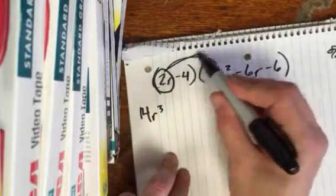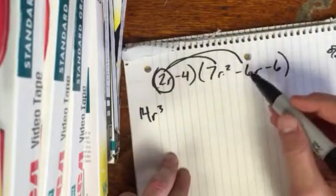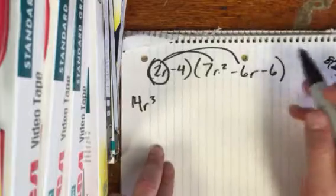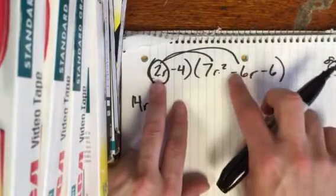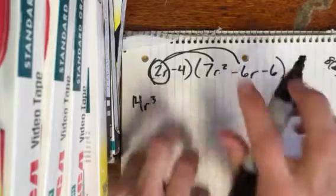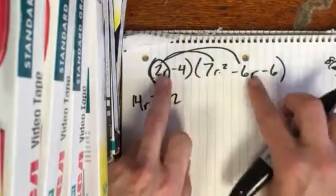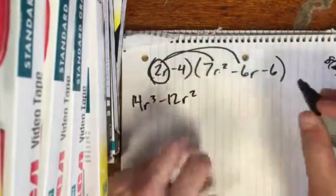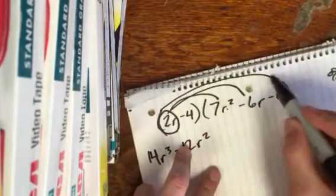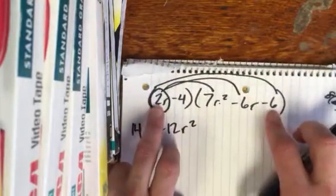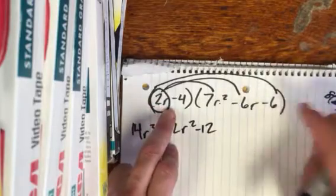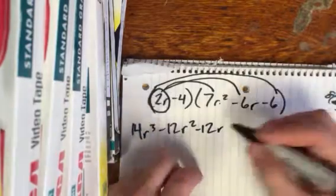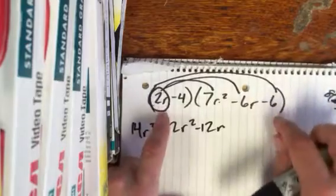Now I want to go to the next one. Don't forget to take that sign with it. So we've got 2 times negative 6r. So 2 times negative 6 is negative 12. And then r times r is r squared. And then the last one, 2 times negative 6 is negative 12. And then r times, there's no r there, so the r stays an r. Don't drop the r off that.